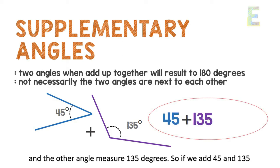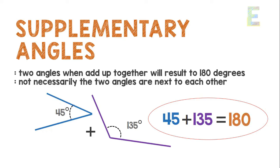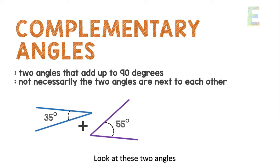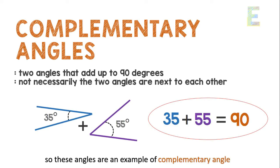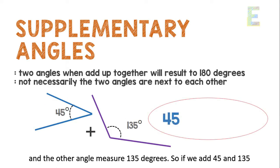If the sum of 2 angles is 180 degrees, they are supplementary. If the sum of 2 angles is 90 degrees, they are complementary.